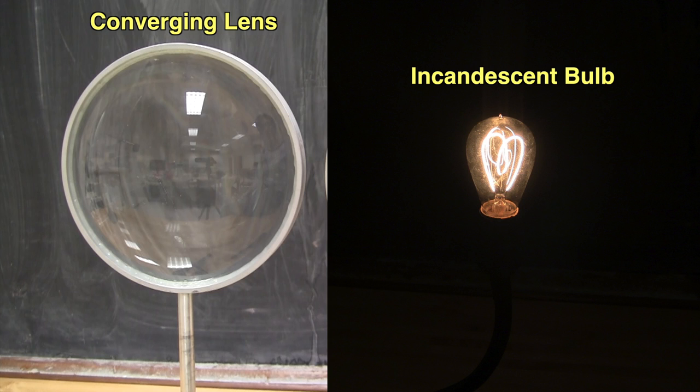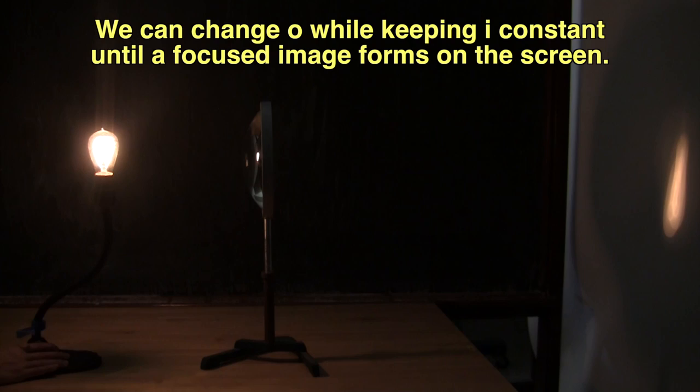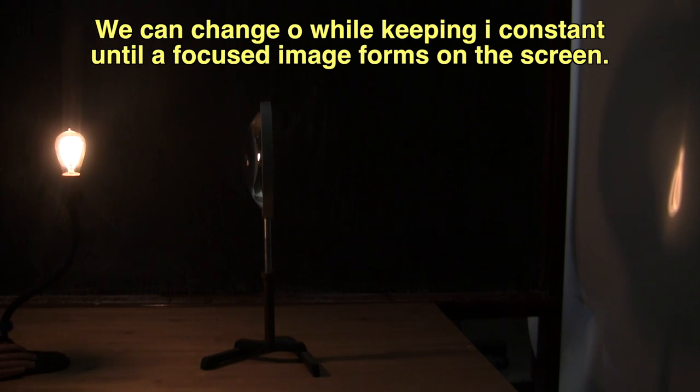Next, let's take a look at what happens when we focus an object that is not at infinity. To do this we will use a converging lens and an incandescent light bulb as our object. To form an image of the object on the screen, we can change the object distance O while keeping the image distance I constant until the location of the image matches the location of the screen.